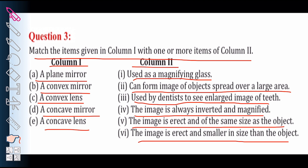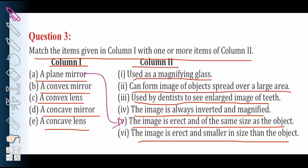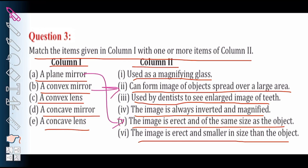First — plain mirror. The image formed by a plain mirror is erect, meaning it is in the upright position, and it is the same size as the object. So the matching option is: the image is erect and of the same size as the object. For convex mirror, the correct option is: it can form images of objects spread over a large area. That is the speciality of a convex mirror, and that is why it is used as a rear view mirror in vehicles.